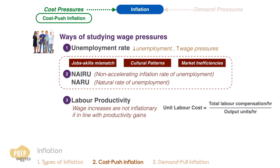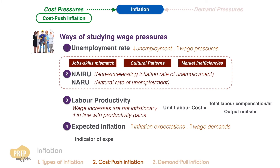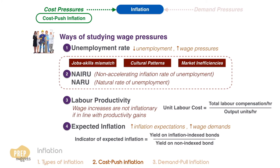An additional source of wage pressure is expected inflation. If workers expect inflation to increase, they will increase their wage demands accordingly. One indicator analysts use to gauge expected inflation is the difference in yield between inflation-indexed bonds, such as Treasury Inflation-Protected Securities, and otherwise similar non-indexed bonds.